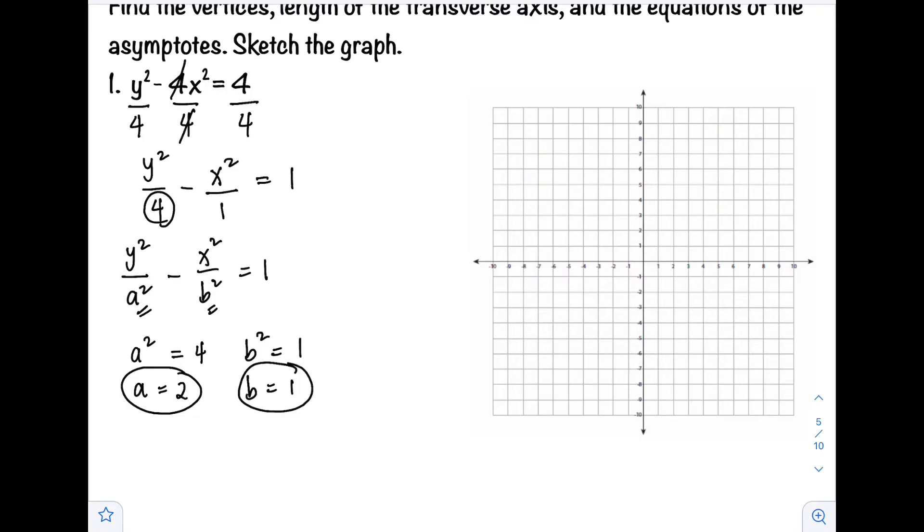Next, to solve for the value of c, we will use c squared equals a squared plus b squared. Our a squared is equal to 4 plus b squared which is 1, so c equals square root of 5.